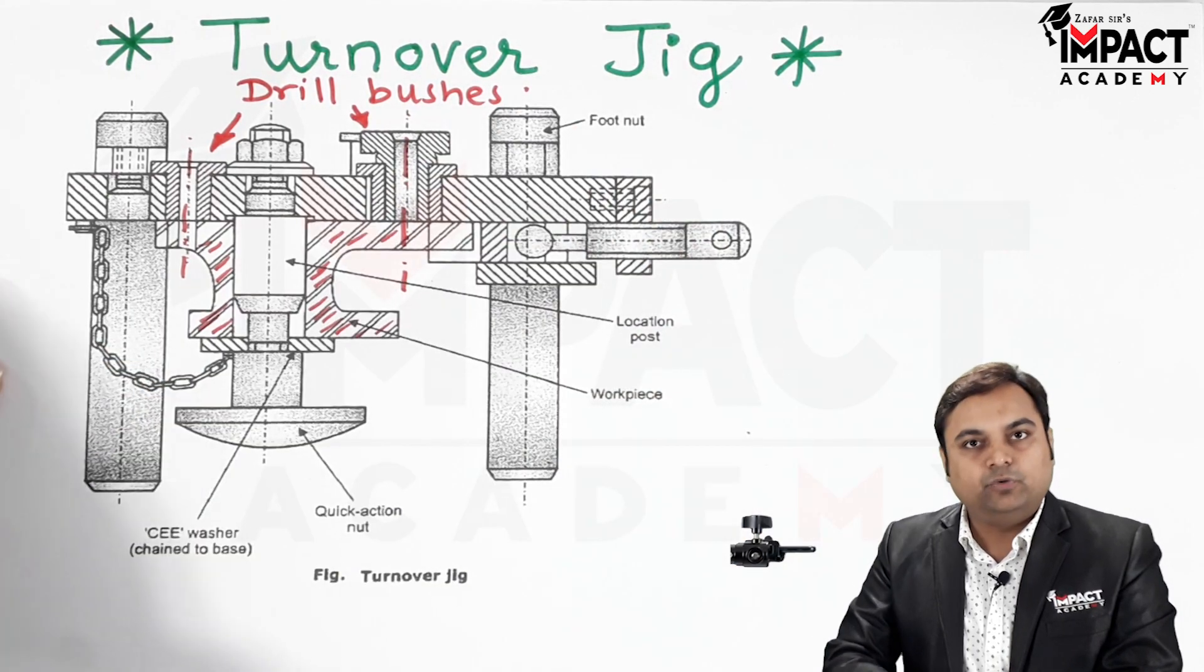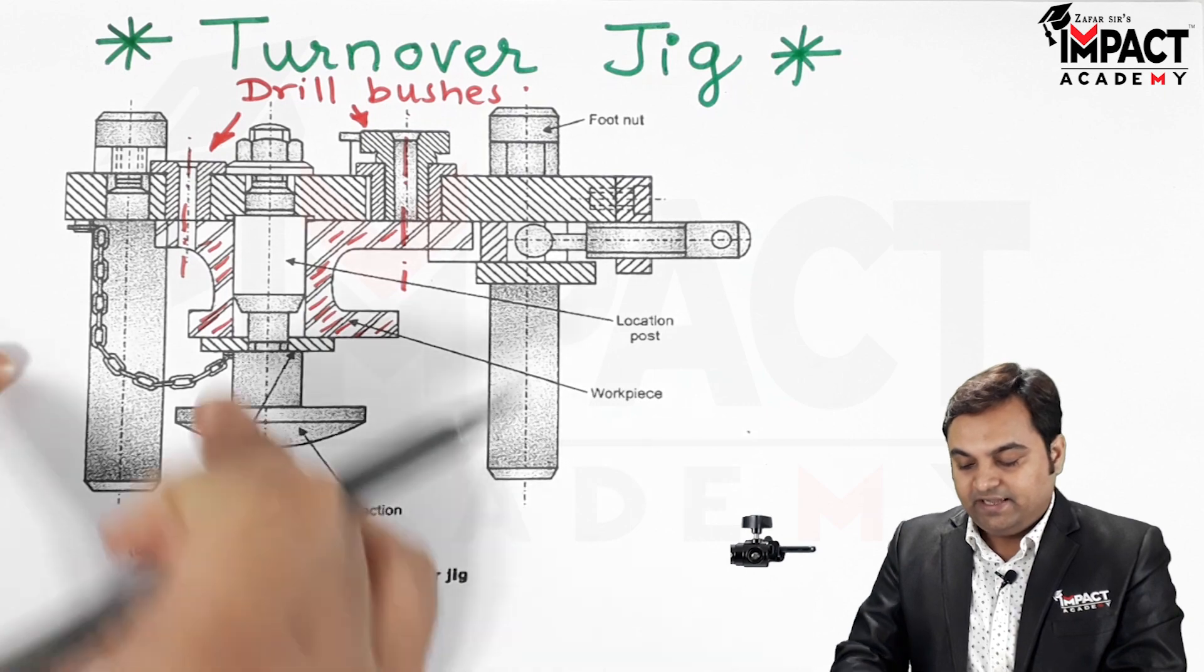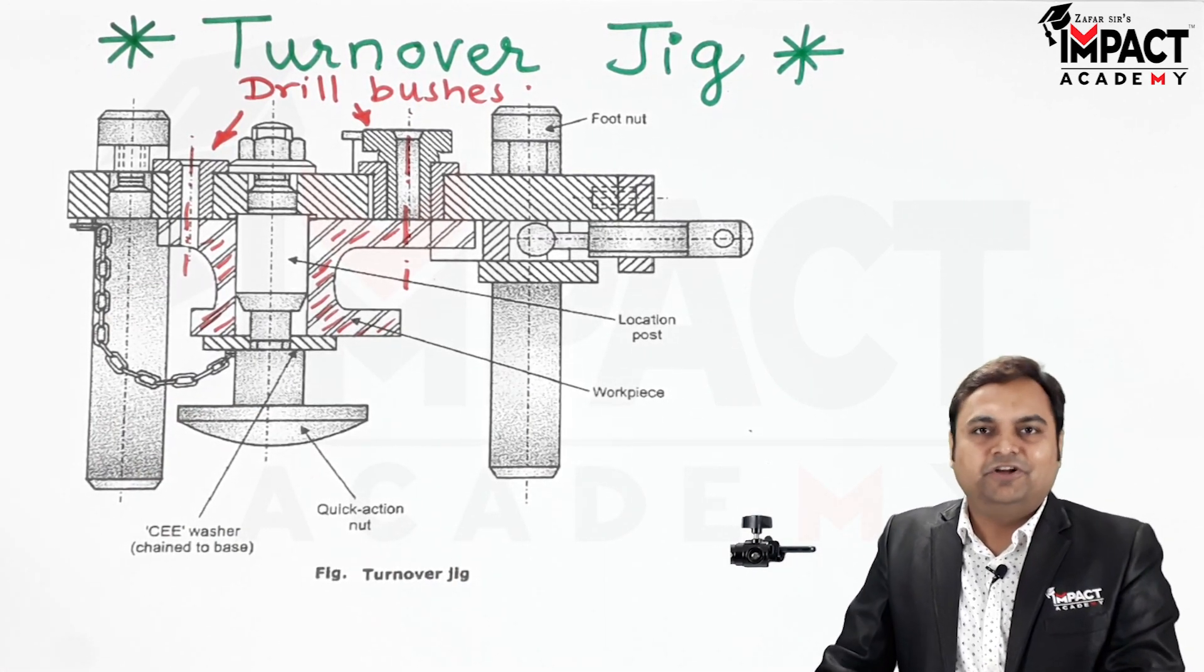Once the hole has been produced, in a similar manner we can turn it over again, remove this quick action nut, that is we have to loosen it, and then unload the workpiece. So in short, that was an explanation regarding the turnover jig.